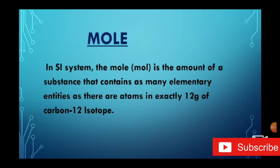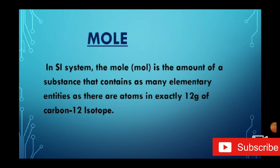In the SI system, the mole is the amount of a substance that contains as many elementary entities as there are atoms in exactly 12 grams of carbon-12 isotope. Simply, the mole denotes how many number of particles are present in atoms or molecules, and the actual number of atoms present in 12 grams of carbon-12 is 6.023 × 10²³ atoms.